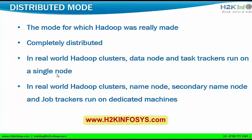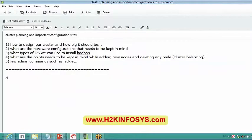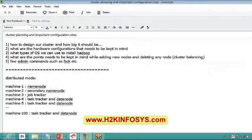The last mode is distributed mode — the mode for which Hadoop was really made. Everything runs on its own JVM and multiple threads can be executed at the same time, so it is completely distributed. In real-world Hadoop clusters, data nodes and task trackers run on a single node, while name node, secondary name node, and job trackers run on dedicated machines. Whatever we discussed in the initial HDFS classes is of distributed mode only.